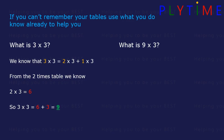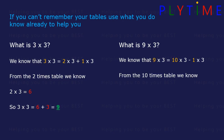What about nine times three? We know nine times three is the same as ten times three minus one times three. From the ten times table, we know ten times three is thirty. So nine times three is thirty minus three, which is twenty-seven.